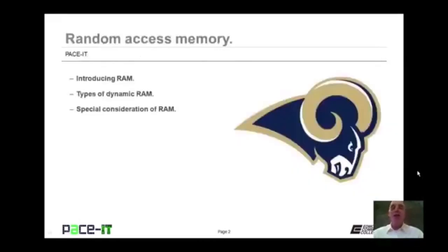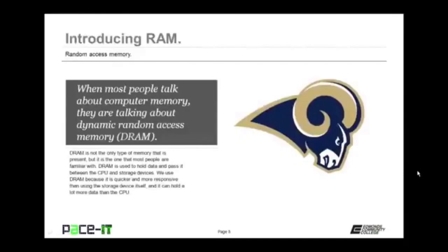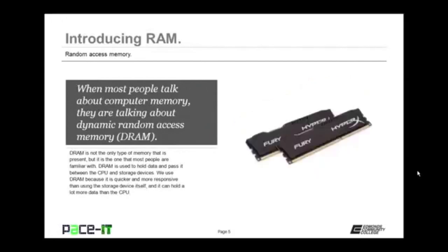Welcome to PACE IT's session on Random Access Memory. Today we're going to introduce RAM, talk about different types of dynamic RAM, and then cover some special considerations of random access memory. When most people talk about computer memory, they're talking about dynamic random access memory, DRAM. DRAM is not the only type of memory present, but it is the one most people are familiar with. DRAM is used to hold data and pass it between the CPU and storage devices.